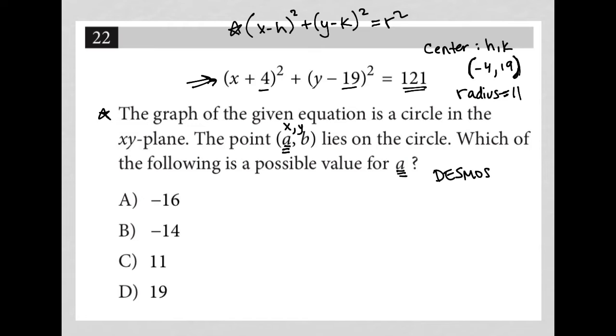So all we're asking is once you've graphed the circle, which one of these x values is actually on the circle? Like that is the question.